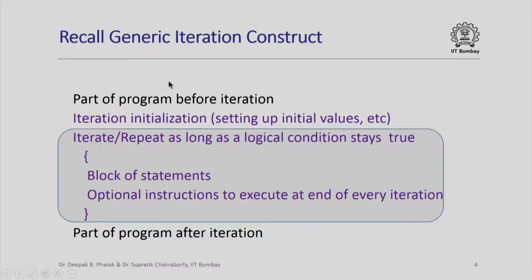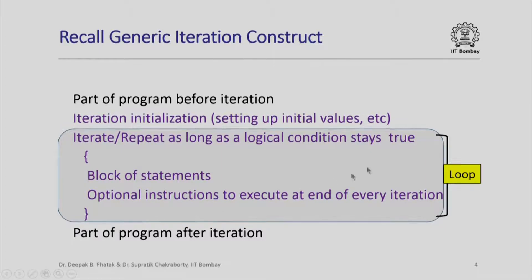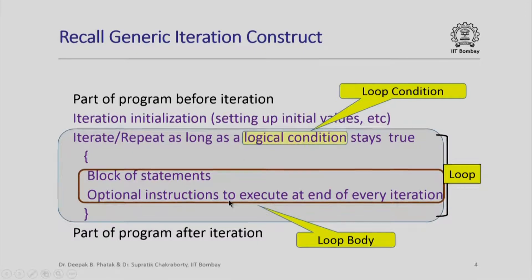Recall this generic iteration construct that we had studied in a previous lecture. In general, we have a part of the program that is executed before the iteration, then some initialization which is iteration-specific, and then the actual iteration happens where we repeat as long as a logical condition stays true over a block of statements. In some cases there are additional instructions executed at the end of every iteration. This logical condition is also called a loop condition, and the block of statements along with those instructions is often called the loop body.